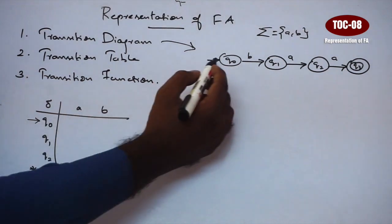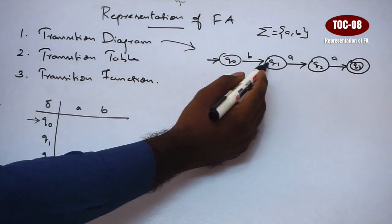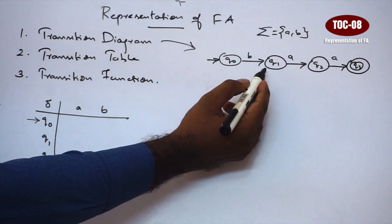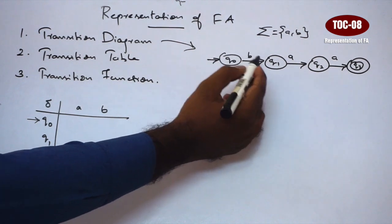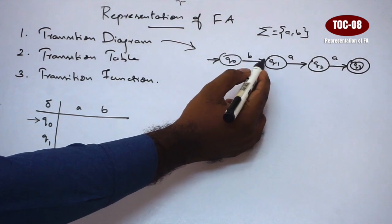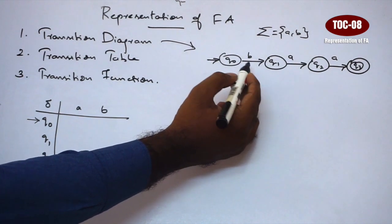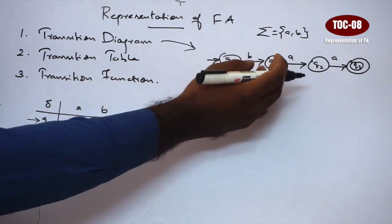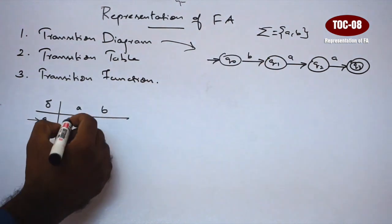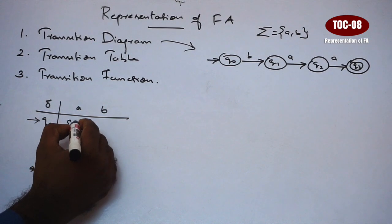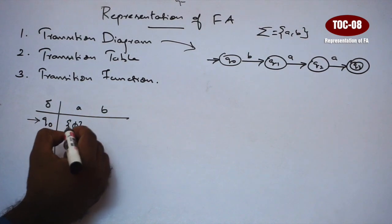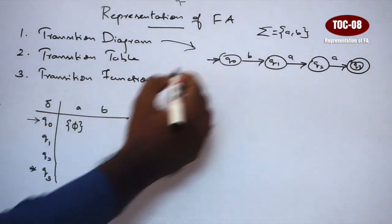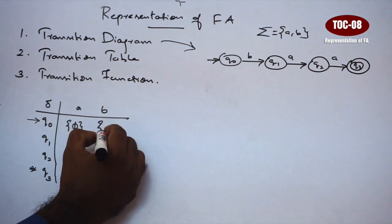Now, Q0 on A — if there is a transition, there is nothing. So in any state, for any particular input symbol, if you don't have any transitions, then we will put null. So Q0 on A is null. Q0 on B goes to Q1.